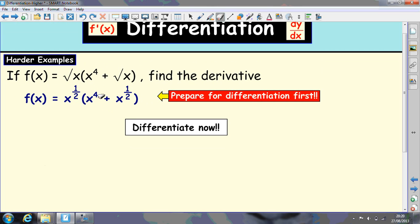Now multiply the indices. This means add the 4 and a half. People think that means 4 times a half, but when you multiply indices, you add them. So that becomes 9/2. 4 and a half is 9/2. And that becomes a half plus a half, which is 1. So that's just x.